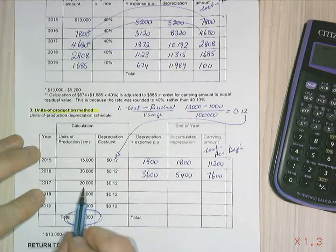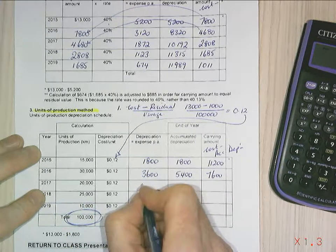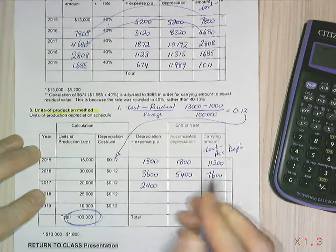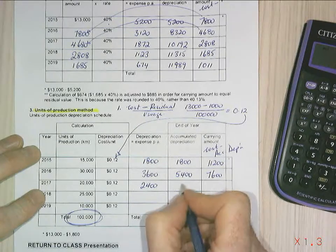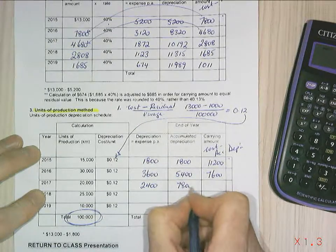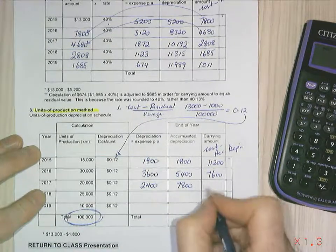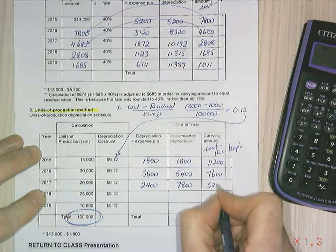Year 3, I used the vehicle for 20,000 kilometres, which gives me $2,400 worth of depreciation. I add that all together and I get $7,800 worth of accumulated depreciation. And a carrying amount of $5,200.